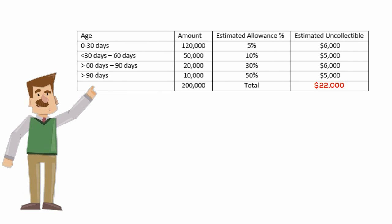The aging schedule shows receivables that are zero to 30 days old at $120,000; 30 to 60 days old at $50,000; 60 to 90 days old at $20,000; and over 90 days at $10,000. That all adds up to the full $200,000. Management then estimated how much to allow for uncollectibility from each category and multiplied that out to arrive at a total Allowance for Doubtful Accounts of $22,000.